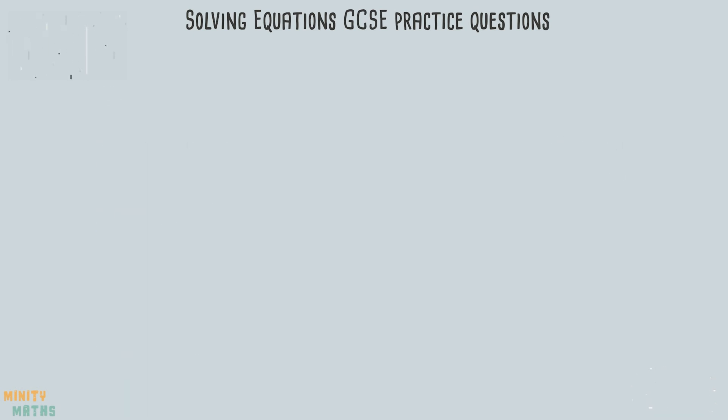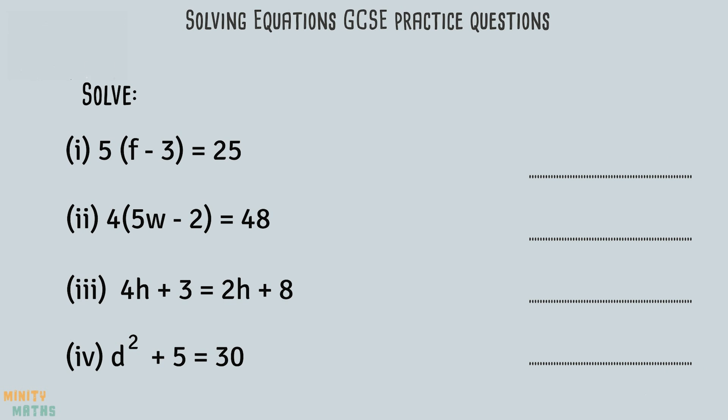The final set of questions involves slightly more complicated calculations to solve. With question 1 there are two ways we can solve this. We can either expand the brackets or rearrange. Let's look at how we can rearrange this equation before solving. Firstly, we can remove the 5 outside of the brackets by dividing both sides by 5. We can then add 3 to each side to cancel out the minus 3 and get f on its own.